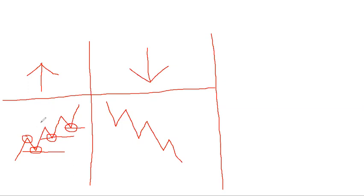This is basic market structure. Now in a downtrend, you want to try and sell as high as possible.